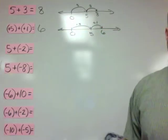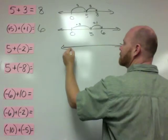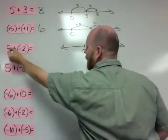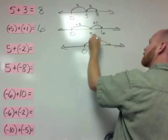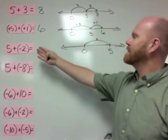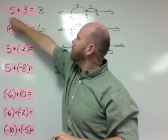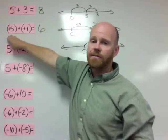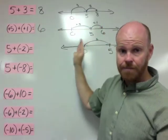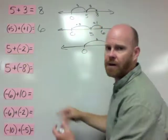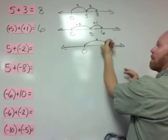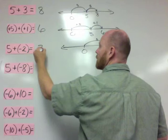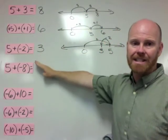Next: 5 plus negative 2. Once again, we're going to start off with that empty number line and start at 0. This positive 5 means go to the right 5, and that puts us at 5. Now this negative 2 — if positive numbers mean a hop to the right, then negative 2 means we're going to hop to the left 2. And that's going to put us at 3. So 5 plus negative 2 is positive 3 because we haven't crossed over into the negative side of 0.